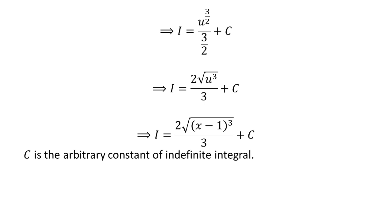We have solved the integral in terms of u. Now, we need to take back the expression in terms of x. For that, I have replaced u by x minus 1 which we had assumed earlier. So, I is equal to 2 times square root of cube of x minus 1 upon 3 plus capital C.